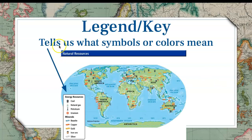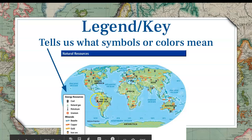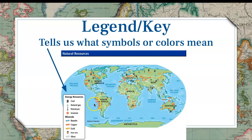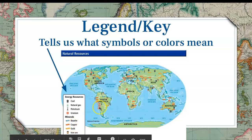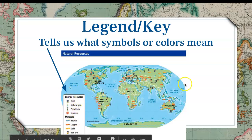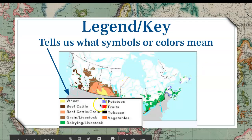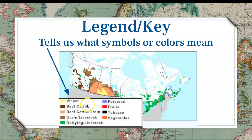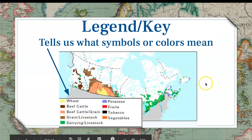Most maps will have a legend or a key. It tells us what symbols or colors mean. This map has symbols for energy resources. So you'll see here in South America there are gold rectangles — I come over to the key and that means there's copper in South America. Over in Australia, yellow rectangles mean gold. In North America, little black pods mean coal. Sometimes they're icons, sometimes they are colors. So in this map of Canada, yellow means wheat, a peachy color means beef or cattle grain, purple means potatoes, green means dairy and livestock.